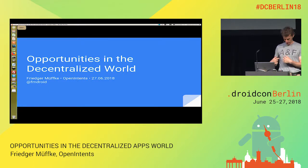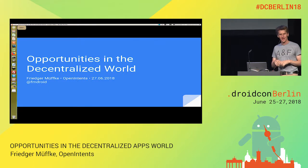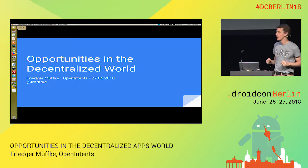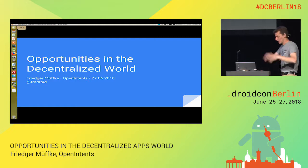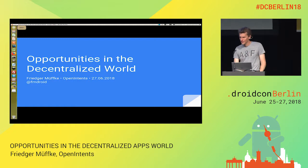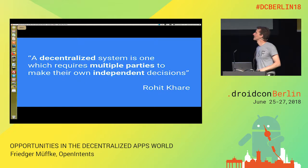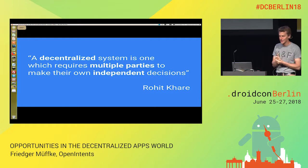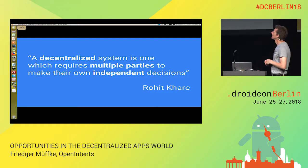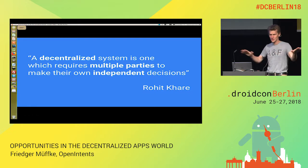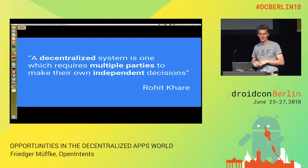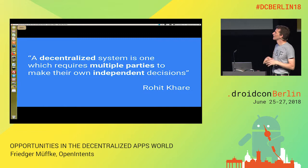I have a wife and these are our initials, and I have three kids, so I'm interested in decentralization. A decentralized system is one which requires multiple parties to make their own independent decisions.